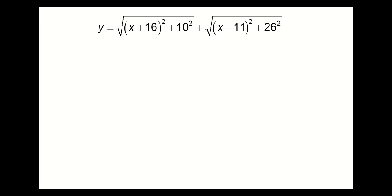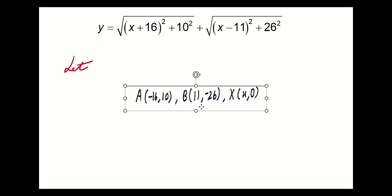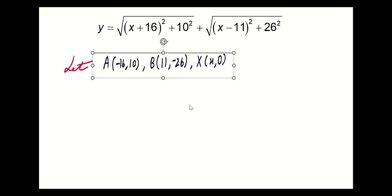We can also consider a different method, for example, coordinate geometry. Now we let A be (-16, 10), B be (11, -26), and X be (x, 0).